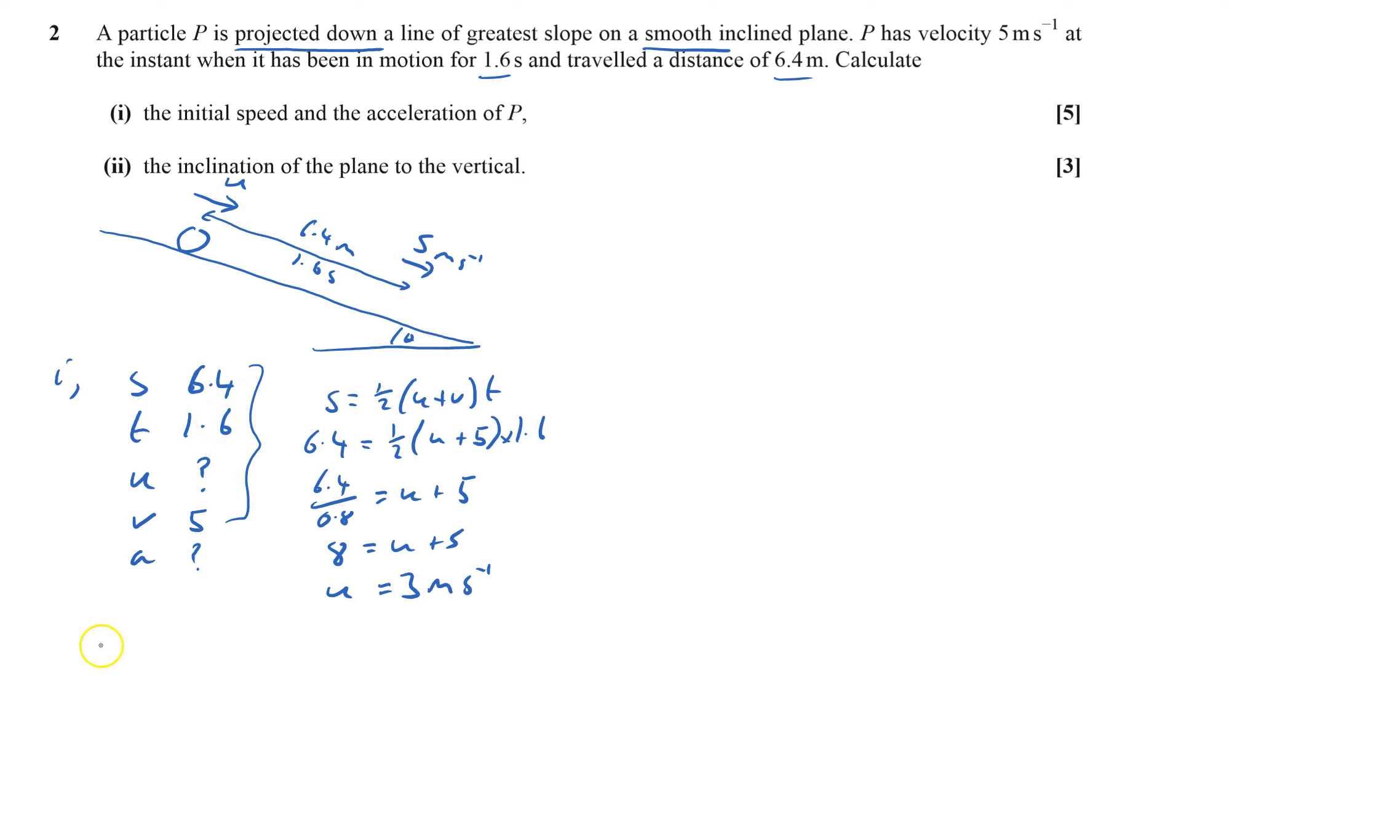That will give me 5 equals 3 plus a times 1.6, and so a equals 2 over 1.6 which equals 1.25 meters per second squared.